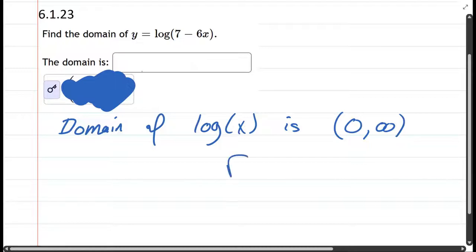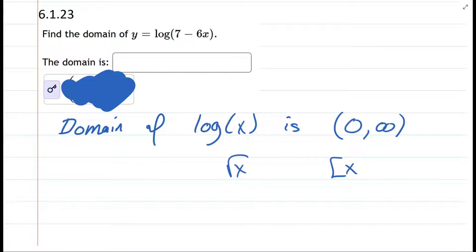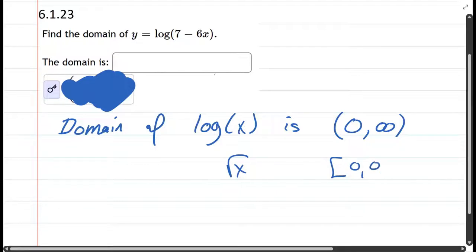If this was, remember back to square roots, we would go from zero to infinity, but we would have a closed interval at zero. The difference here when we have logs is we have open at zero.